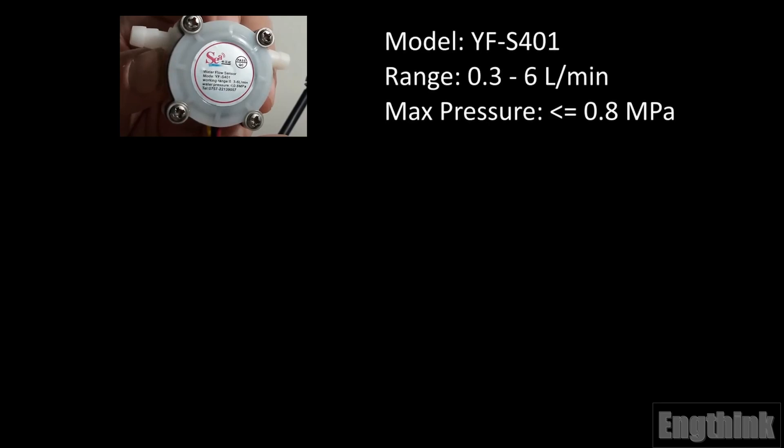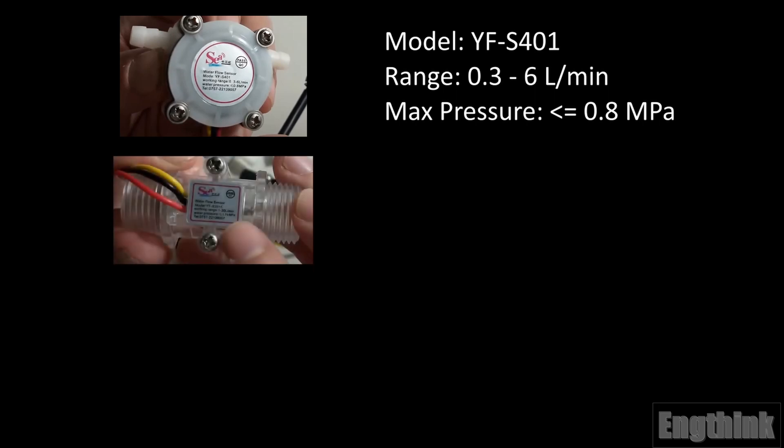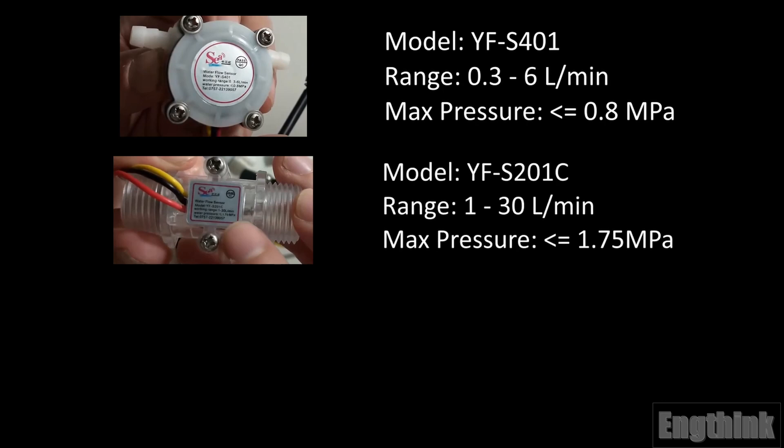Let's summarize the three models that we talked about. Model YF-S401: 0.3 to 6 liters per minute, pressure should be less than 0.8 MPa. The transparent model is YFS-201C, the range of flow is 1 to 30 liters per minute, and the pressure should be less than 1.75 MPa.